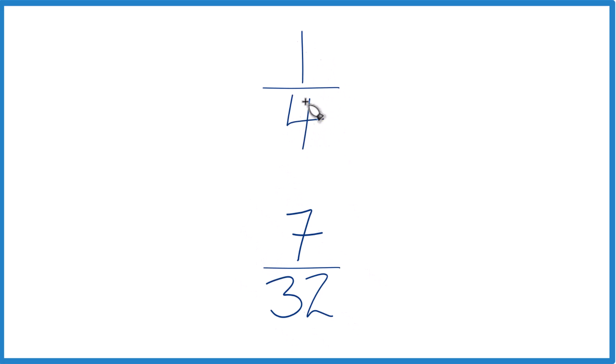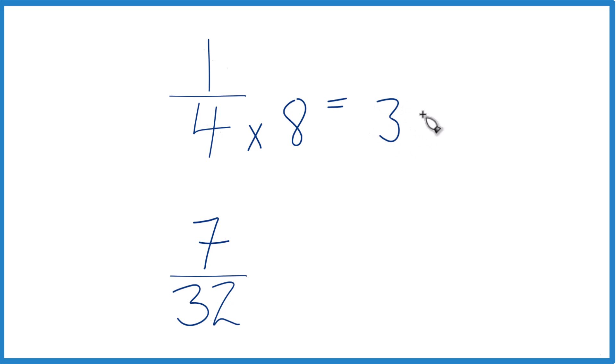You could also find a common denominator. Right now we have four and 32, but if we had the same denominator, then we would just compare the numerators, figure out which is larger. So let's do that. I know that four goes into 32 eight times, so I'm just gonna multiply four times eight and that equals 32.